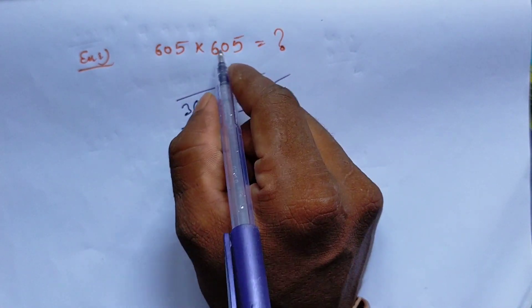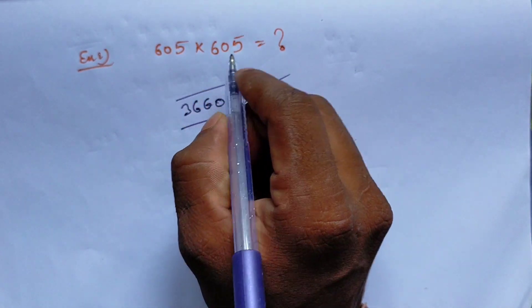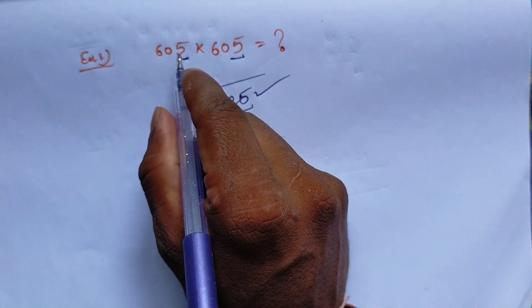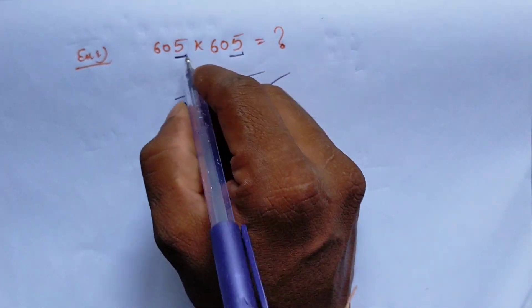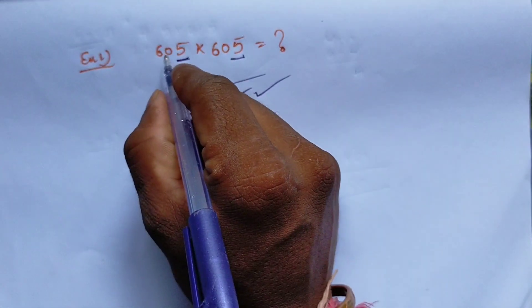Let's look at the shortcut method. First, both numbers are the same. Next condition: the last digit is 5. So 5 times 5 is 25.